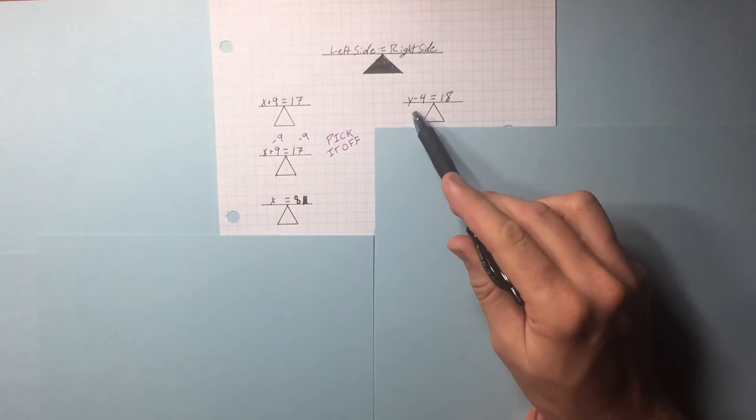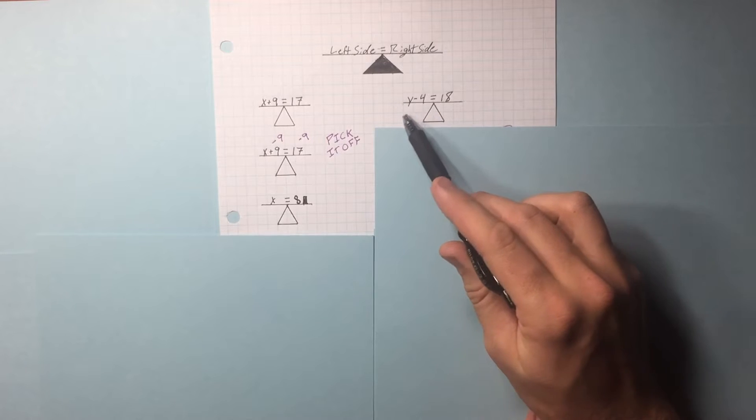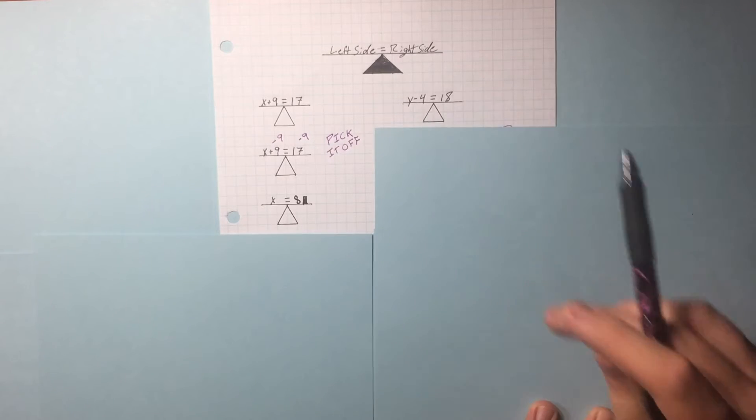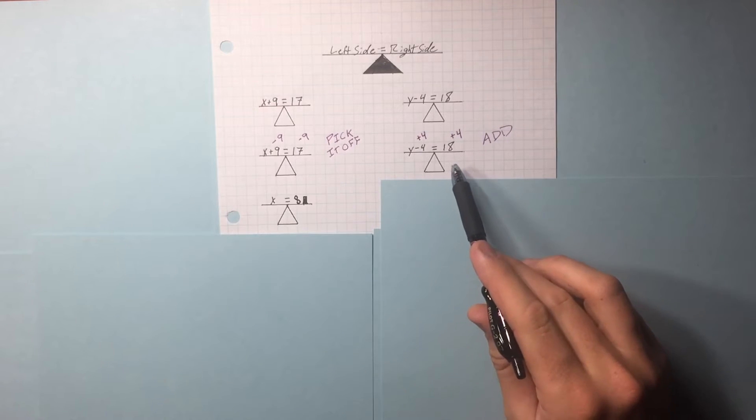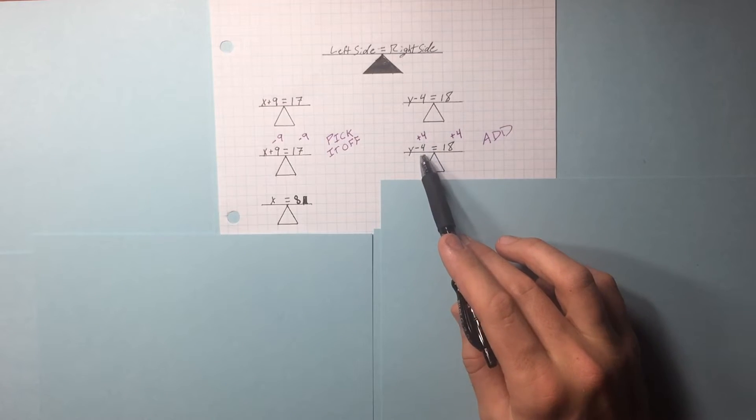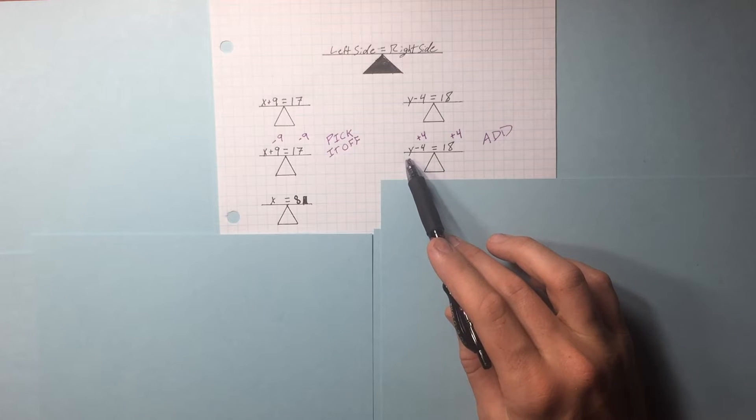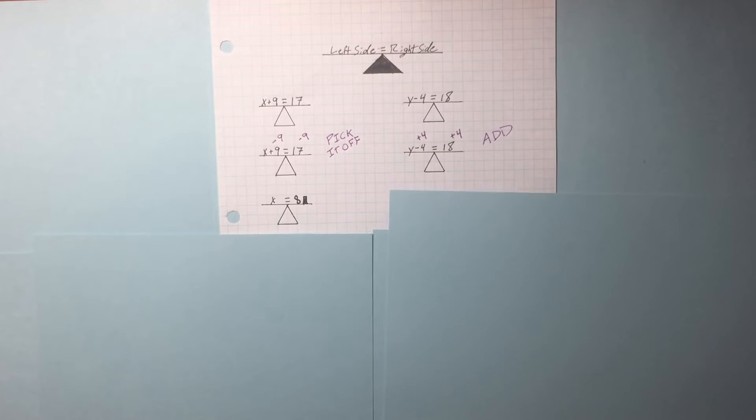Let's look at another one. What do we need to do to get this Y by itself? What's standing in the way of that? This minus 4. What's the opposite of minus 4? Plus 4. And we have to do it on the left side and the right side. Minus 4 plus 4 equals 0, so we just have Y left over. And 18 plus 4 is 22. Y equals 22.